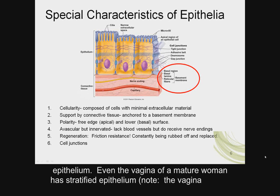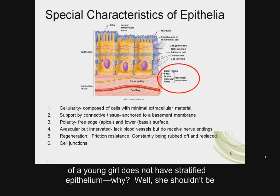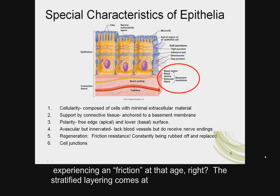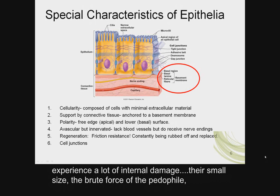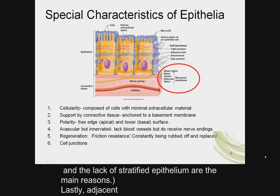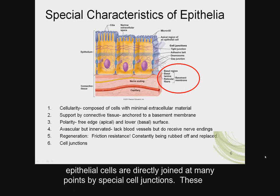For example, the epidermis of your hands, feet, and body consists of stratified epithelium. Even the vagina of a mature woman has stratified epithelium. Note that the vagina of a young girl does not have stratified epithelium — she shouldn't be experiencing any friction at that age. The stratified layering comes at the onset of puberty. Young girls who are sexually molested with penetrating objects often experience a lot of internal damage; their small size, the brute force of the perpetrator, and the lack of stratified epithelium are the main reasons.